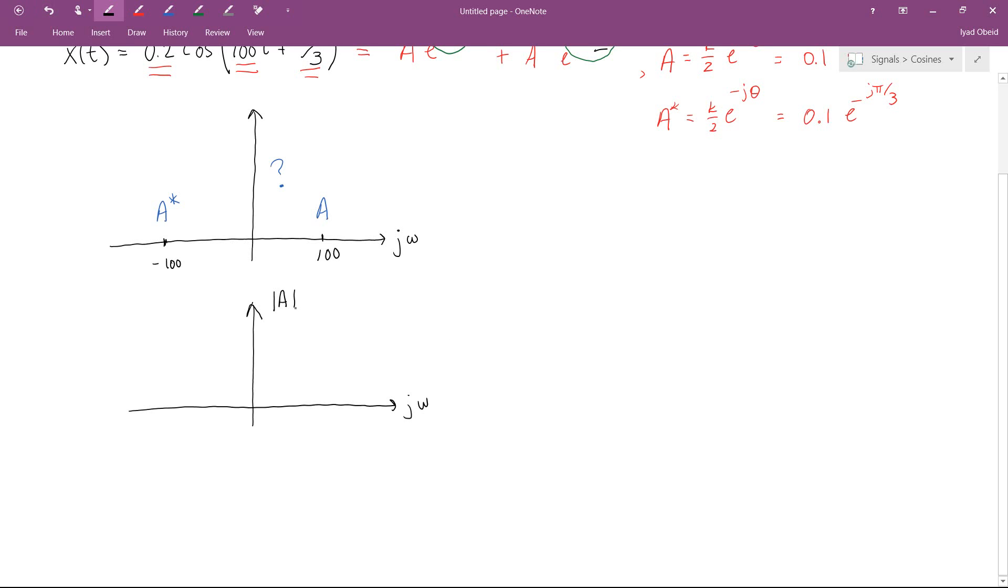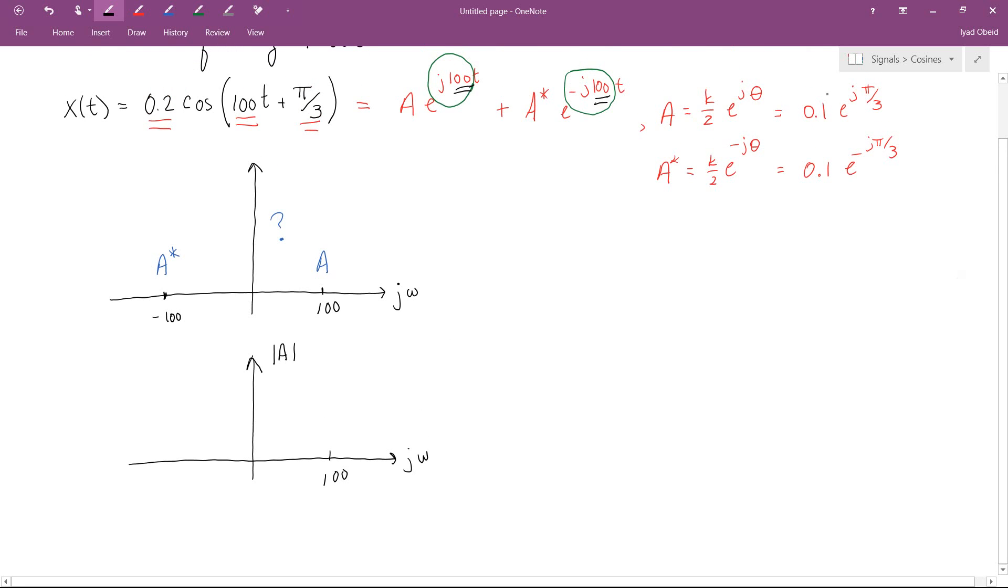So we know that at frequency 100, the magnitude is 0.1. So let's go ahead and draw 0.1. We also know that at frequency minus 100, we also have a magnitude of 0.1. So let's go ahead and draw that. So that's the magnitude plot.